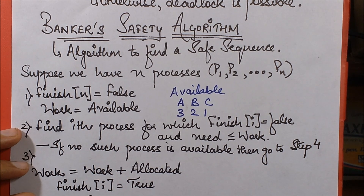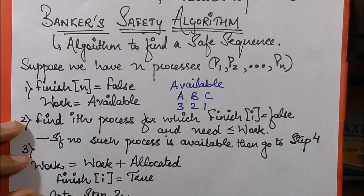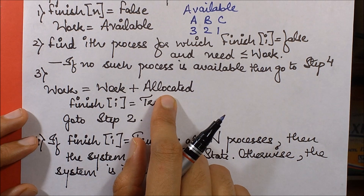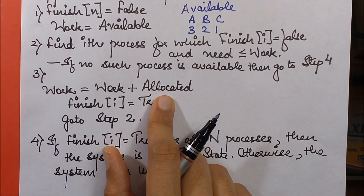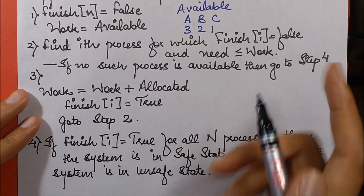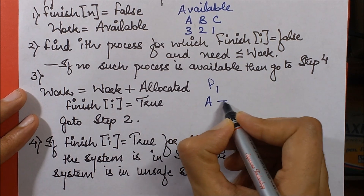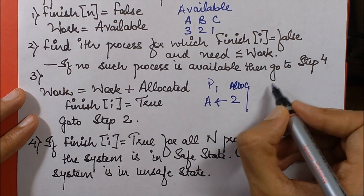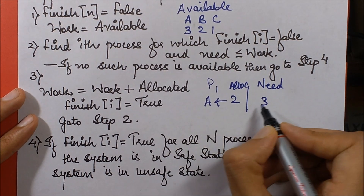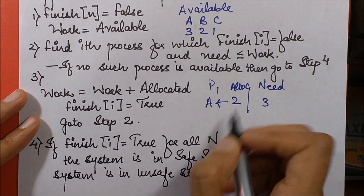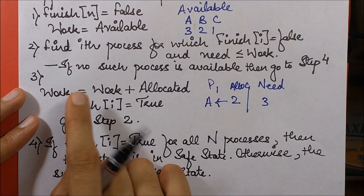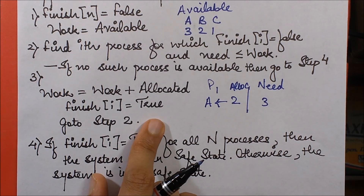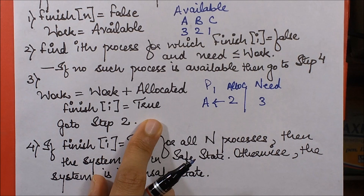Otherwise, we set Work = Work + Allocation[i] and Finish[i] = true, then go back to step two. Allocation is the number of resources already allocated to a process. For example, if process P1 has already been allocated two instances of resource A but needs three more, that is the distinction between Allocation and Need. After fulfilling the need and the process completes, it releases all allocated resources, so Work increases by Allocation[i].